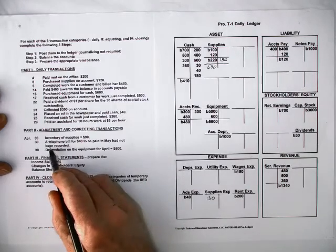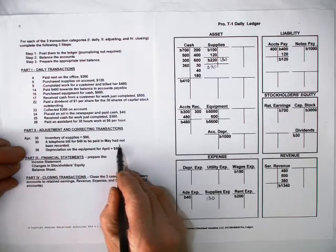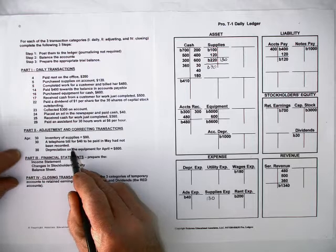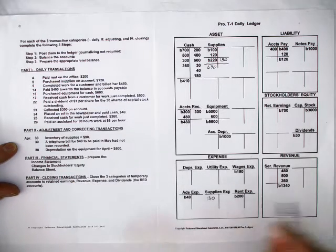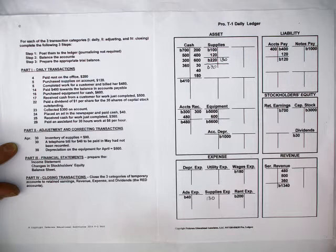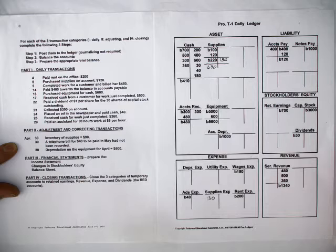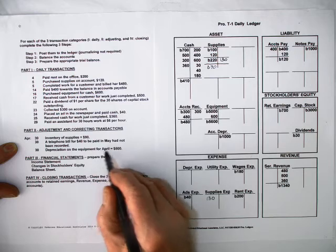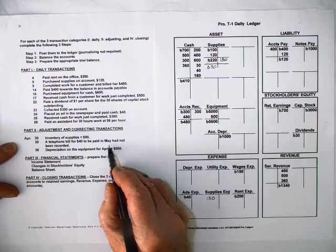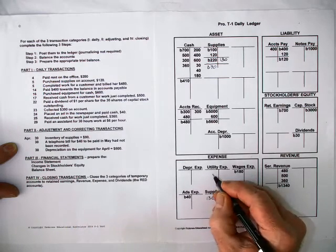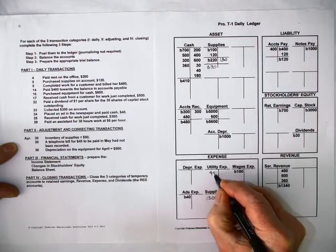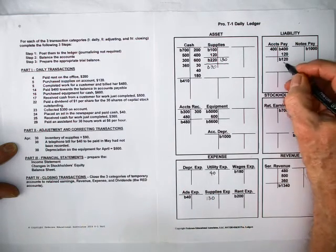The next transaction: telephone bill for $40 to be paid in May had not been recorded. The first thing you want to ask yourself is why did you receive the telephone bill to be paid in May when we're working in April? Well, it's because we used up the utility in April, so therefore it has to be in the financial statements for April, even though we have not received the cash. So what we're going to do is — since we owe it for the month of May — we're going to first put it into utility expense for $40. And because we owe it, we're going to put it up here under accounts payable for $40.